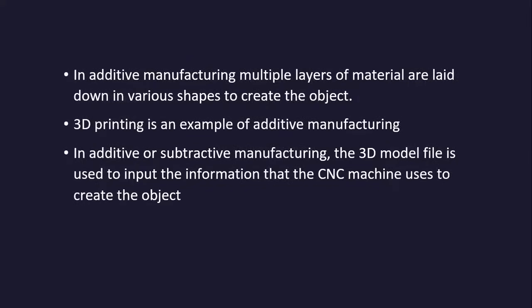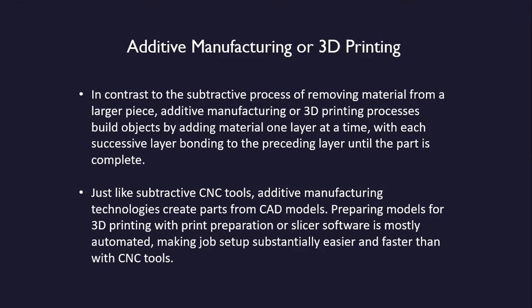In additive manufacturing, multiple layers of material are laid down in various shapes to create the object. 3D printing is an example of additive manufacturing. In contrast to the subtractive process of removing material from a larger piece, additive manufacturing builds objects by adding material one layer at a time, with each successive layer bonding to the preceding layer until the part is complete.